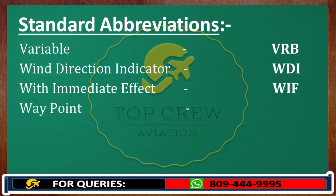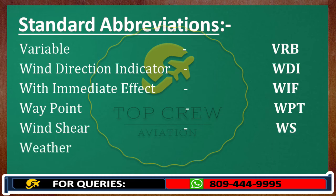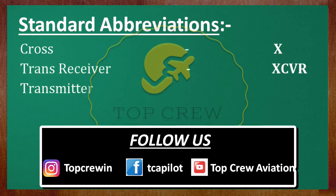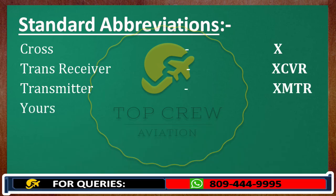Waypoint: WPT. Windshear: WS. Weather: WX. Cross: X. Transceiver: XCVR. Transmitter: XMTR. Yours: YR.